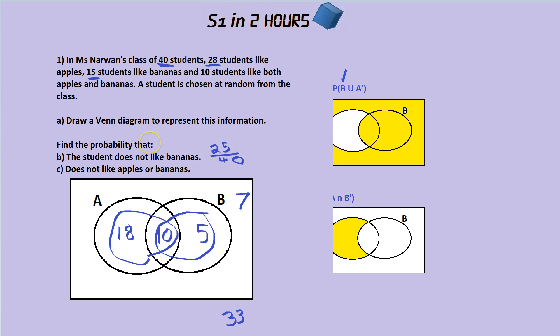Part C, and these questions do get quite easy once you have your good Venn diagram, does not like apples or bananas. So we talked about that before. The only people who don't like apples or bananas, they must be outside both bubbles, so it must be 7. So this answer would be 7 out of 40.